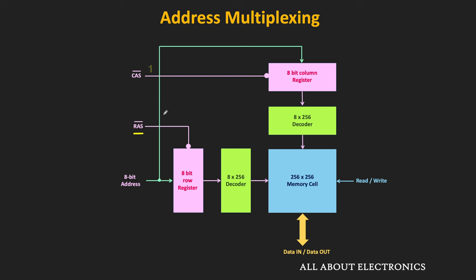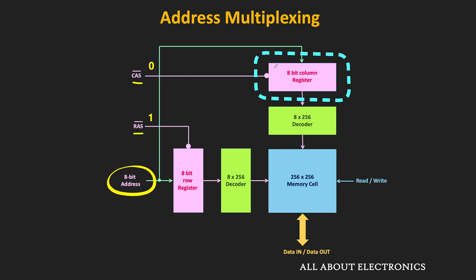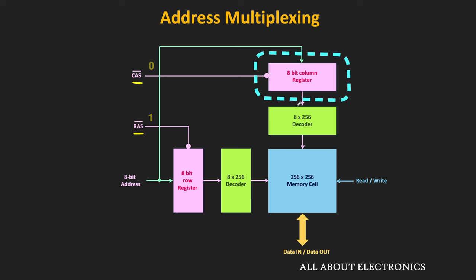During this time, since the CAS signal is high, the column address register remains disabled. Once the row address decoder selects the specific row, the RAS signal is made high. Then the 8-bit column address is applied on the address line and the CAS signal is made low, latching the column address into the column register. The column address decoder then selects the specific column, and since both row and column addresses are now available, the specific word in the memory can be selected.